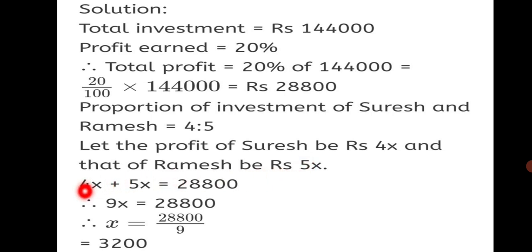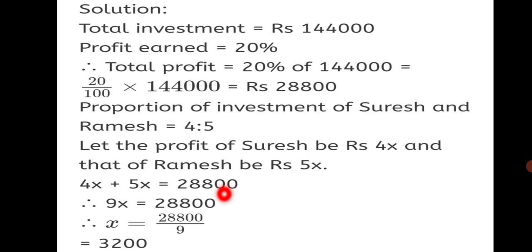We have to form an equation. When we add their profits, we know the total profit. So our equation is: 4x + 5x = 28,800. That is, profit of Suresh plus profit of Ramesh equals 28,800. Therefore 9x = 28,800, so x = 28,800 ÷ 9 = 3,200. Now substituting x = 3,200 into 4x and 5x, we find how much profit each one earned.